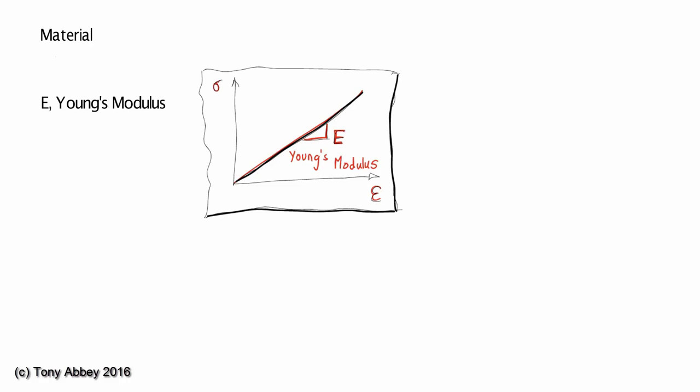Young's modulus is the relationship between the stress and the strain for the material. The slope of this graph is the Young's modulus, the material stiffness. Steel has a steeper slope than aluminium because it is a stiffer material.